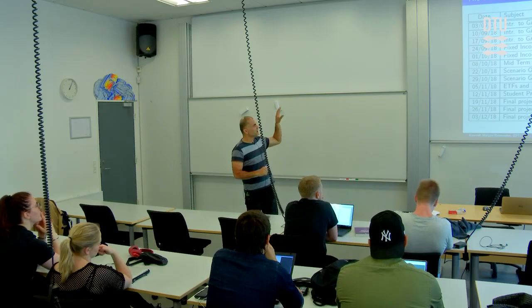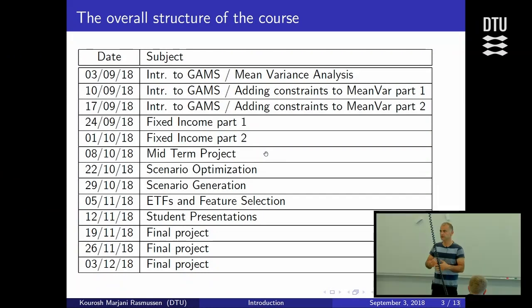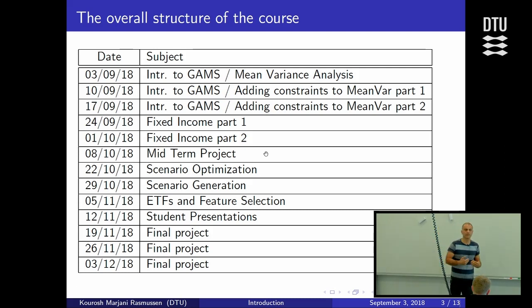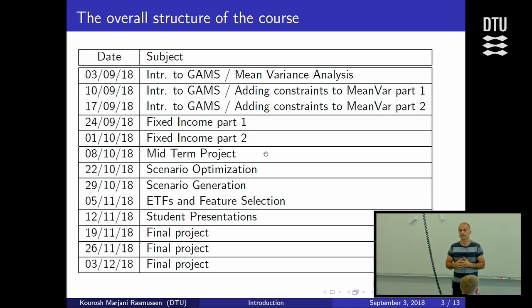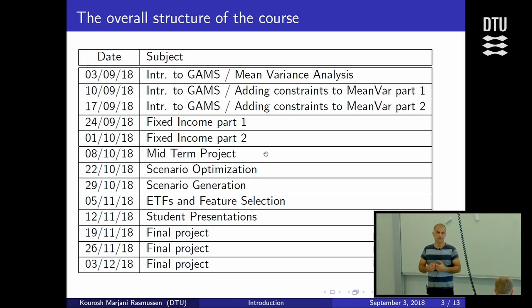If you had Introduction to Financial Engineering, you've already been introduced to the Markowitz model. From next week we'll be building additional assumptions on top of the mean-variance model, entering practical constraints of great importance in real life — constraints that the methods from the introductory course can't really solve. That's part of what you learn here: tackling real-life financial optimization problems.